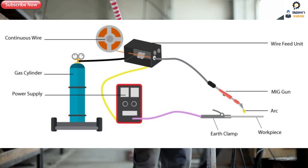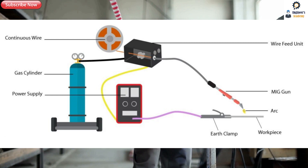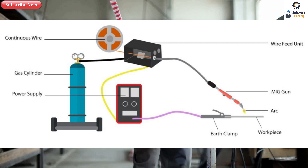Gas metal arc welding, well known as MIG welding, uses a consumable metal electrode which is shielded with gases like argon, helium, etc. to protect the weld area from oxidation. It can generate more than one layer of welding material. A filler wire is fed continuously through the electrode, which joins the metal.